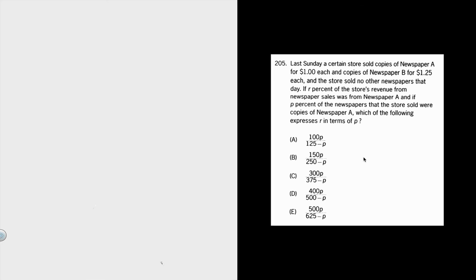We're given two variables: r and p. We want to end up with r in terms of p, meaning we want r equals p times something.